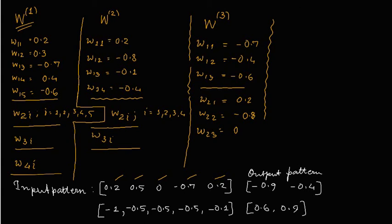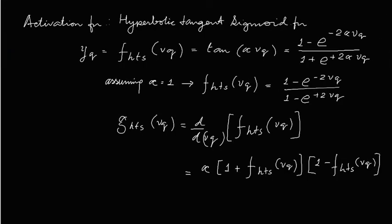To be specific in the calculations we have assumed 2 input patterns. The first input pattern has 5 values given here and the corresponding output pattern is shown. The second input pattern and second output pattern are also given. We have taken the activation function to be hyperbolic tangent sigmoid function, which we call FHTS, represented using this formula. Here we have assumed alpha to be 1.